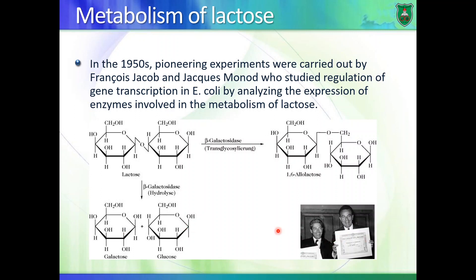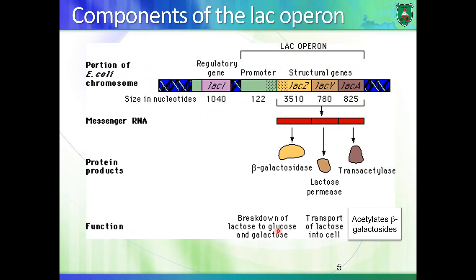Jacob and Monod received the Nobel Prize for their work. The lac operon — remember an operon is a genetic unit, a cistron transcribed into one single messenger RNA, but translated producing different proteins each with its own function that participate in the same process. The proteins produced from the lac operon are beta-galactosidase, lactose permease, and transacetylase. Beta-galactosidase is the enzyme that breaks down lactose into glucose and galactose.